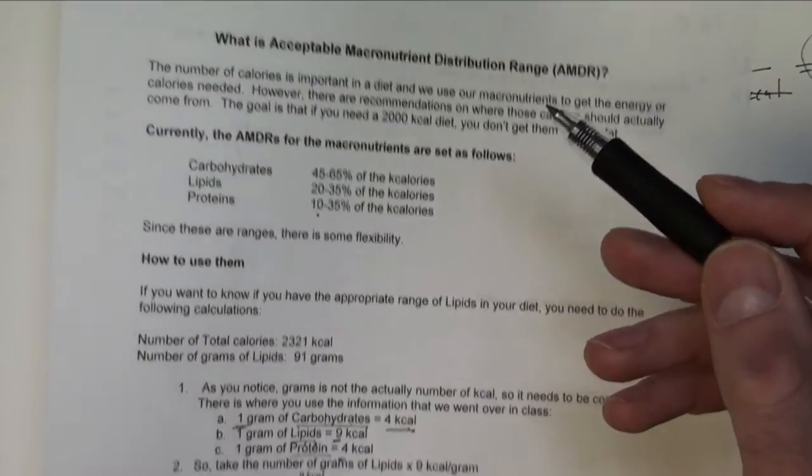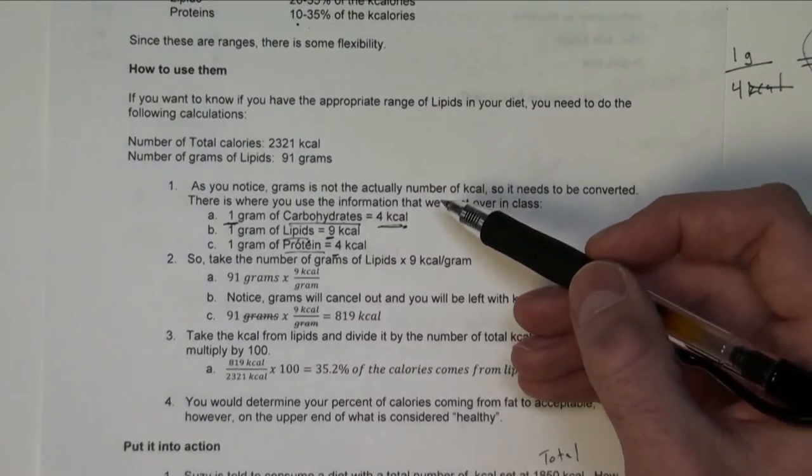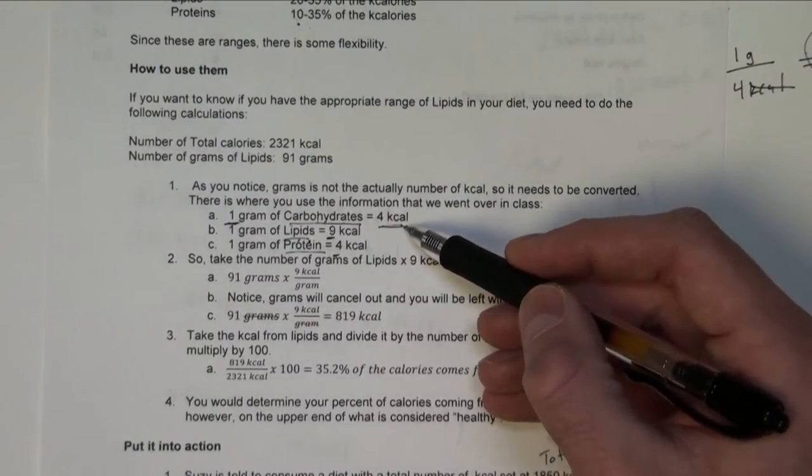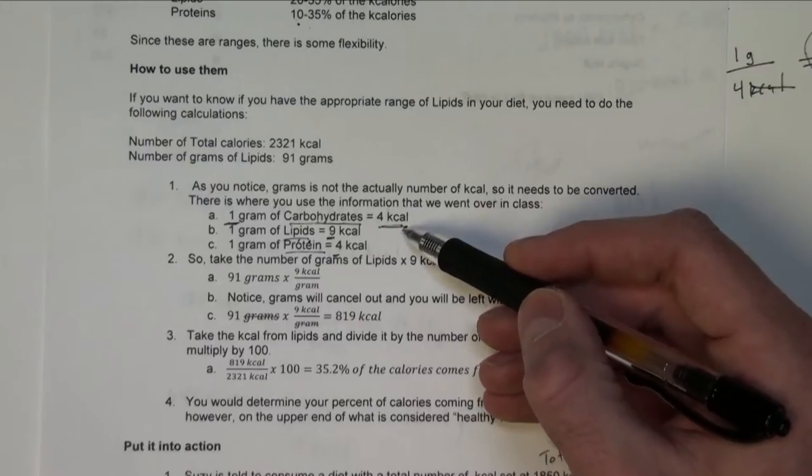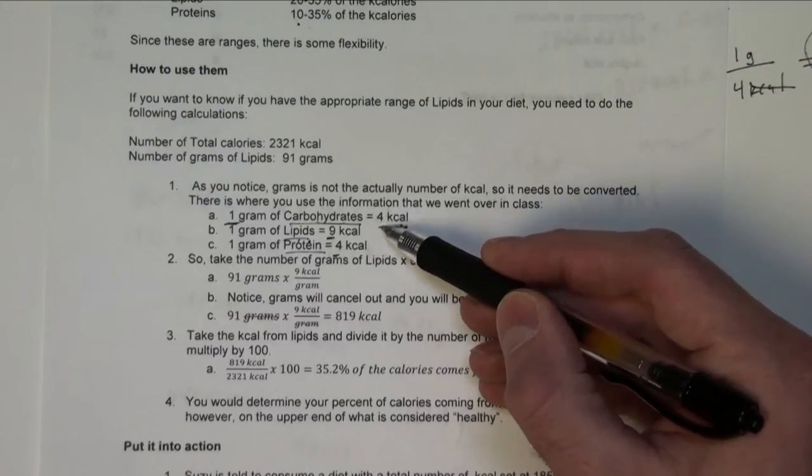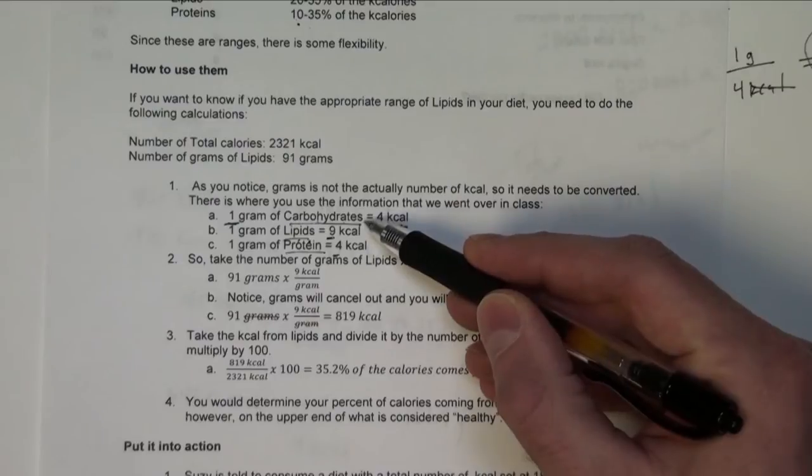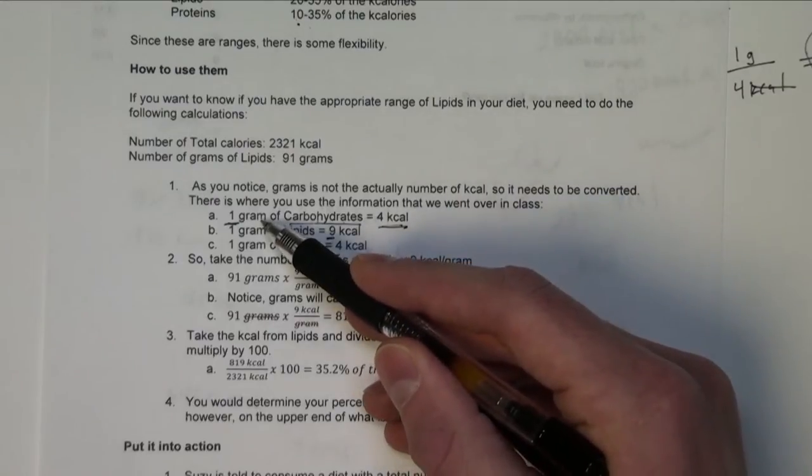Some other important numbers to be aware of is actually how many calories there are per unit of measurement of mass. So four kilocalories of carbohydrates is equivalent to one gram of carbohydrates.